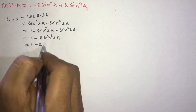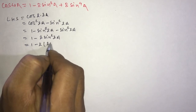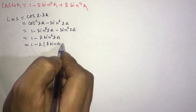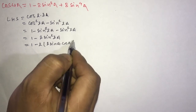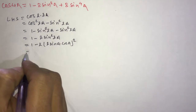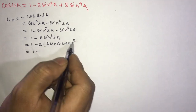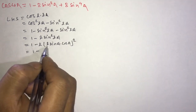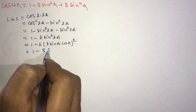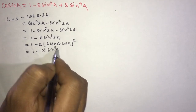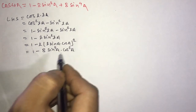Now use the formula of sine 2a here. Sine 2a equals 2 sine a dot cos a. So sine squared 2a equals 2 sine a dot cos a, whole squared. We get 1 minus 2 times 4, that is 1 minus 8 sine squared a dot cos squared a.